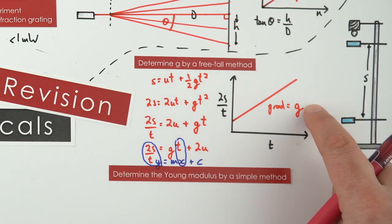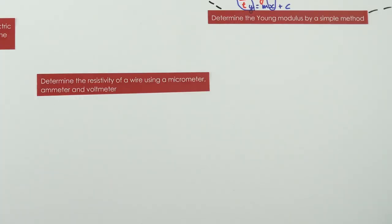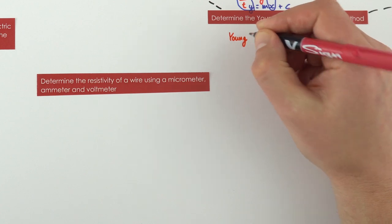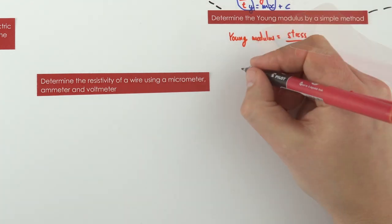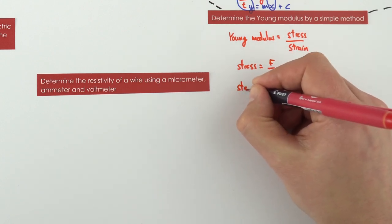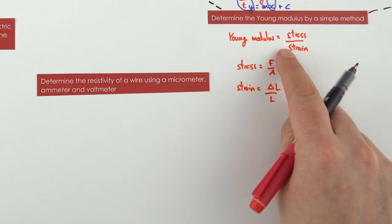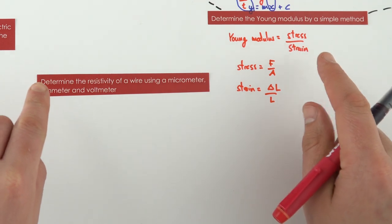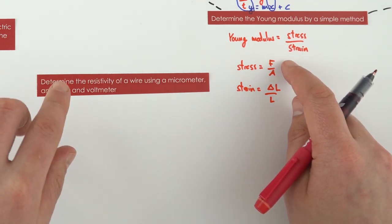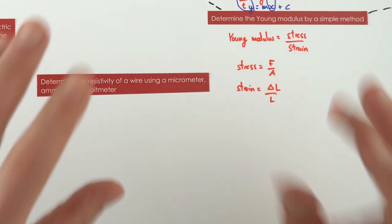The value of g should be approximately 9.81 m/s², or equivalently 9.81 N/kg. Next, we look at the Young modulus, which is a material property. The Young modulus equals stress divided by strain, where stress is force per unit area (F/A) and strain is the change in length divided by the original length (ΔL/L). We take a piece of wire and stretch it by applying a force, then observe how it changes length as we increase that force.